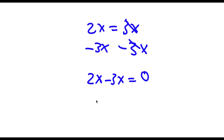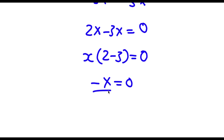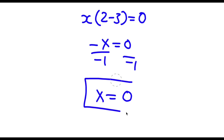Now if I factor out x from here I get x times 2 minus 3 is equal to 0. 2 minus 3 is negative 1, so now I have negative x is equal to 0. So my answer is x equals 0.